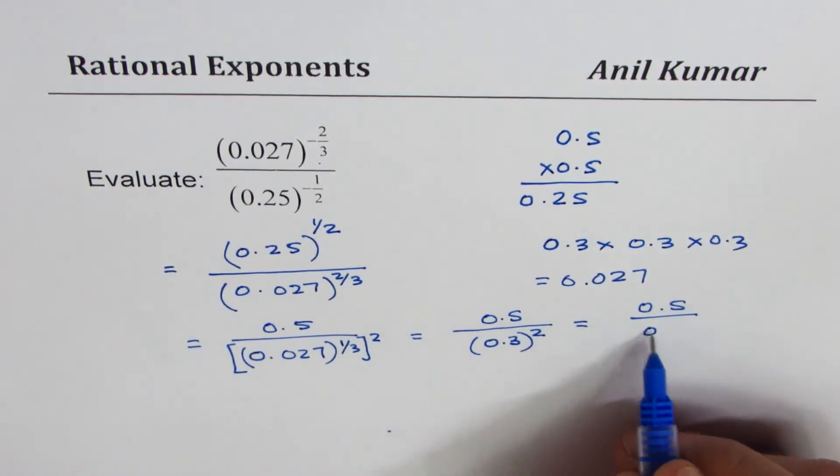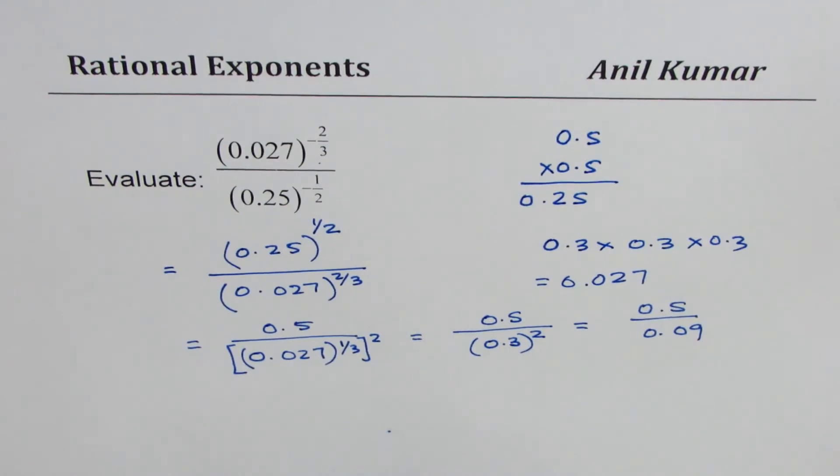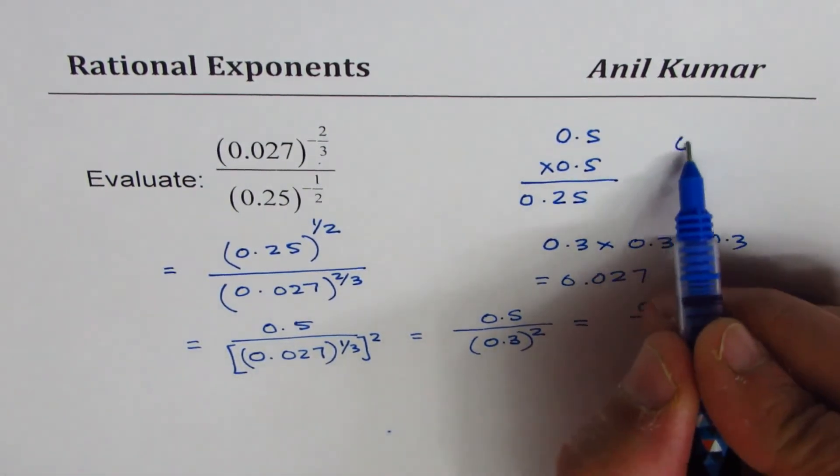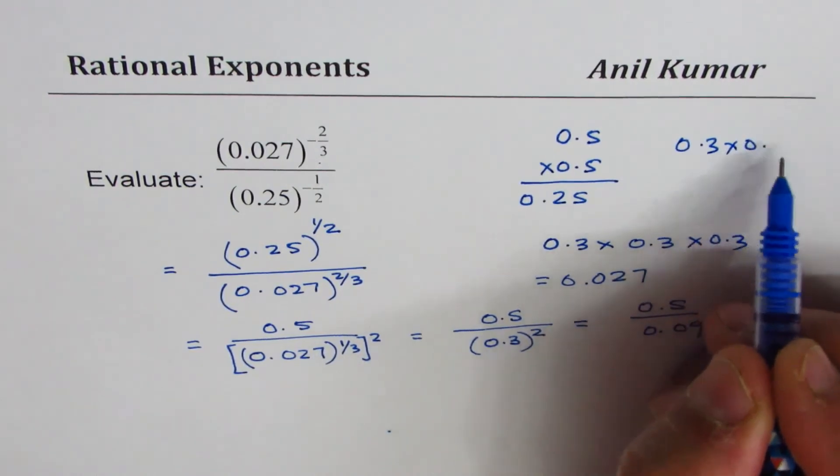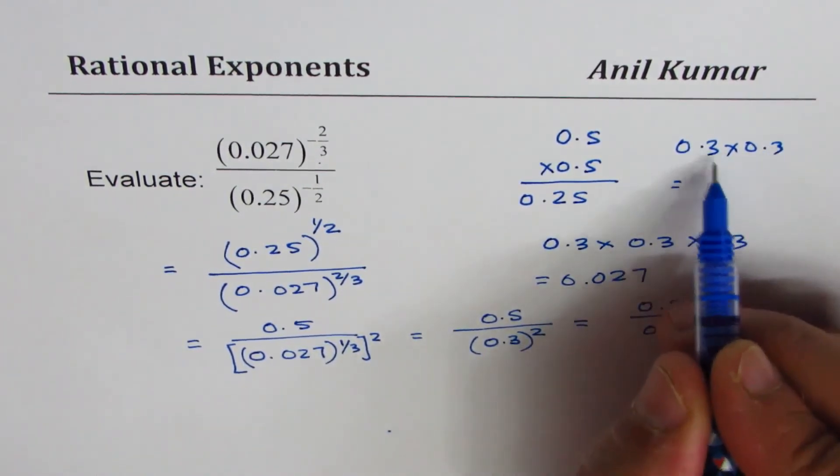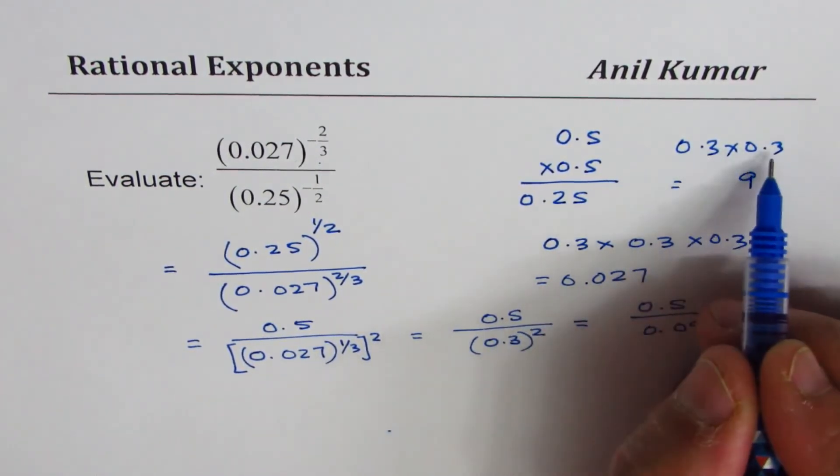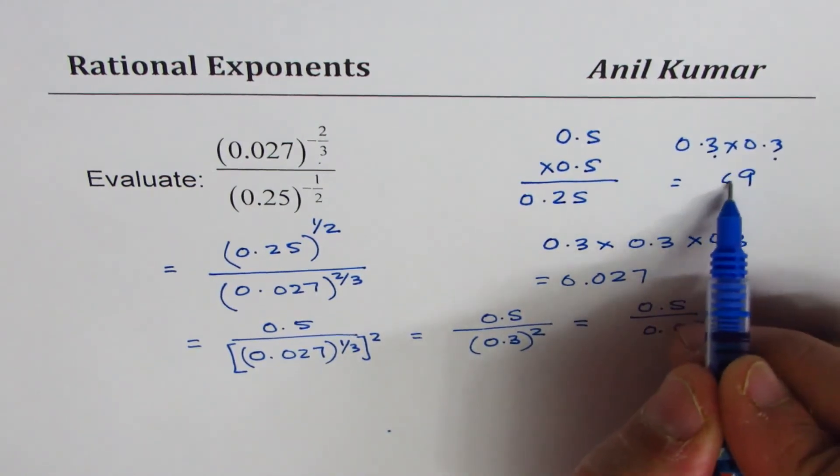It is not 9, it is 0.09. 3 times 3 gives you, let's do this: 0.3 times 0.3 will give you 3 times 3 as 9. Since there are two decimal places, these two, you have to put a decimal here, so you get 0.09.